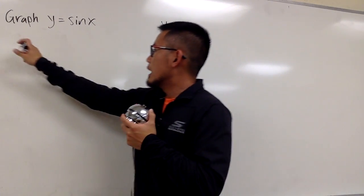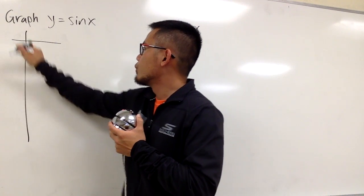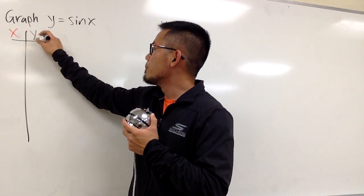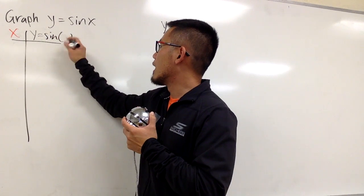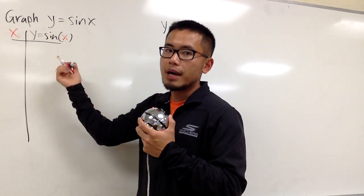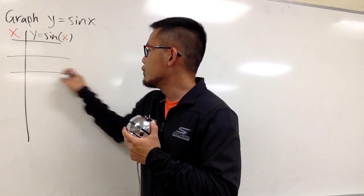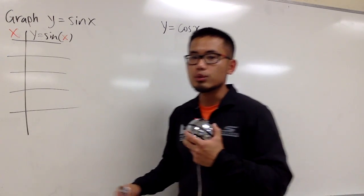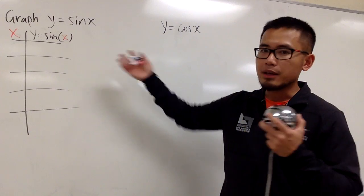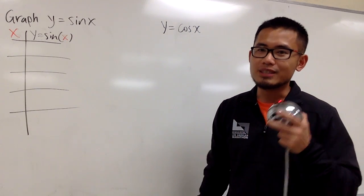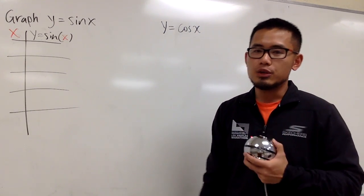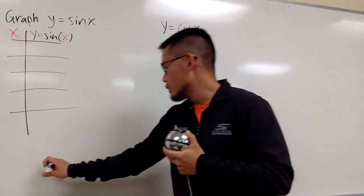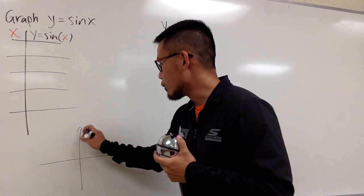First of all, I will show you by making a table. We will have some x values for the input, and y will be sine of whatever x you choose. We will select a few x values. When we are doing sine and cosine, the best thing to do is look at the unit circle, but you don't have to memorize the whole thing — just the four important points.